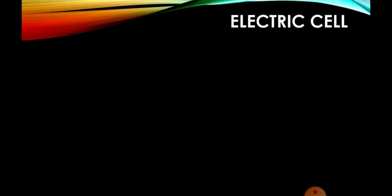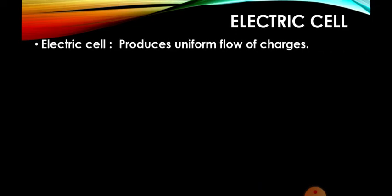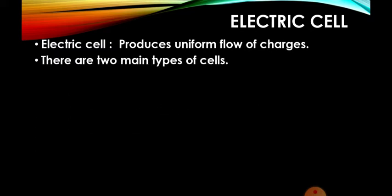Today we are going to focus on dry cells. First you should know about what electric cells are and what types of electric cells exist. An electric cell is the one which produces a uniform flow of charges.